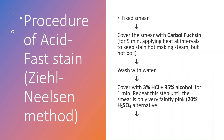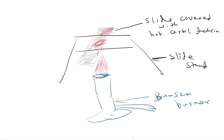Now for the Ziehl-Neelsen procedure on a fixed smear: apply carbolfuchsin as the primary stain and leave it for five minutes. During this time, apply heat at intervals using a Bunsen burner held beneath the slide. Make sure you do not heat continuously — only heat until steam is formed, not until it boils. Boiling is too much and will damage bacterial morphology.